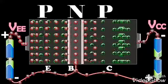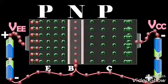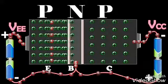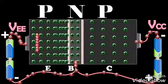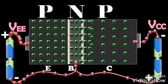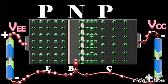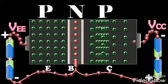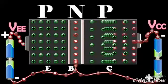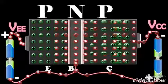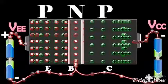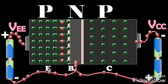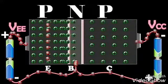The loss of total number of electrons per second is made up by the flow of an equal number of electrons from the negative terminal of VEE into the base. The flow of these electrons constitutes the base current IB.